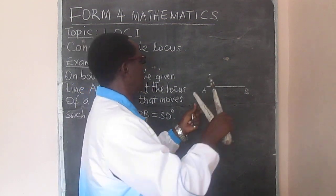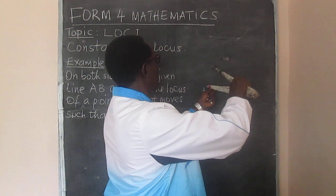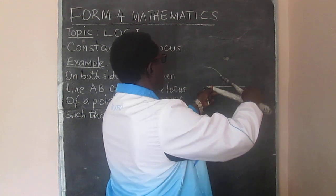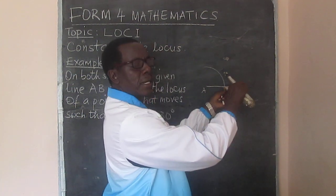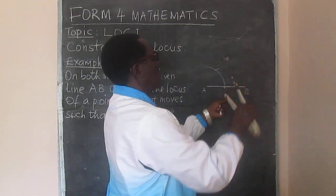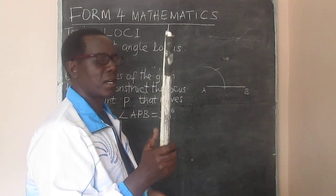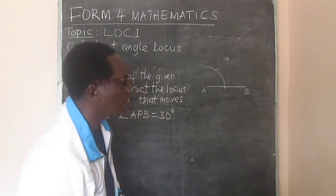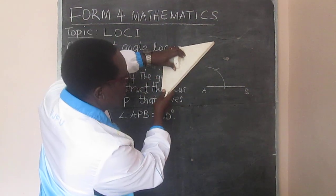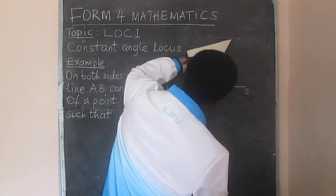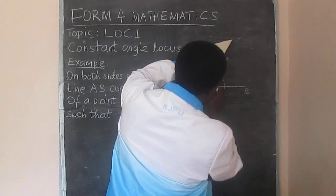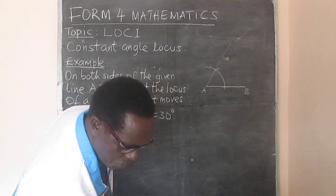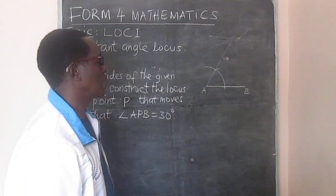Let's construct an angle of 60 degrees. You open up your pair of compasses to a given radius and you strike an arc. Then strike an arc. From the point where the arc meets the line AB, you strike another arc using the same radius. We already now have a 60 degree angle. We can complete that — we can join A to this point here — and that gives us 60 degrees at A.